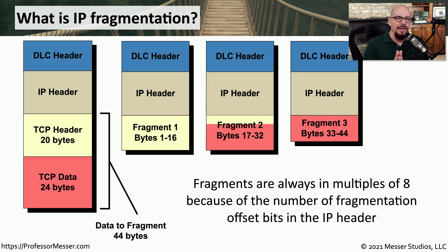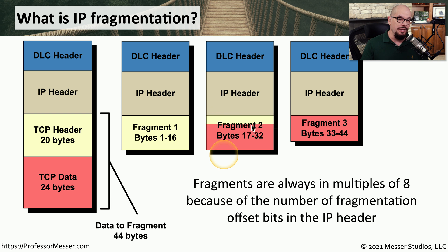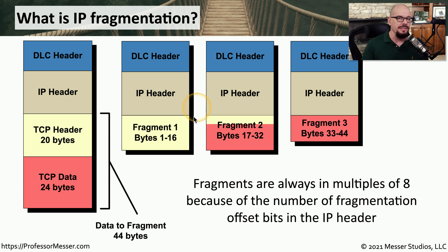Let's take an example where we can only send a very small amount of data through the network. In this example, 16 bytes of data is the maximum transmission unit supported on this particular network. That means we might have 44 bytes of data that needs to be fragmented. As we're sending it through the network, we're going to fragment the first 16 bytes, then send another frame with another 16 bytes, and the last frame sends the remaining amount of data up to 16 bytes. So if we need to send 44 bytes but the MTU is only 16 bytes, we end up splitting a single frame into three separate frames.